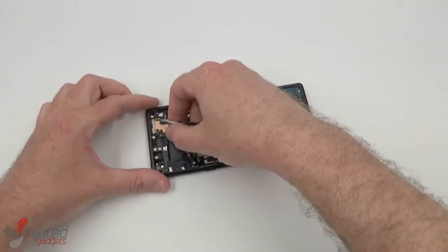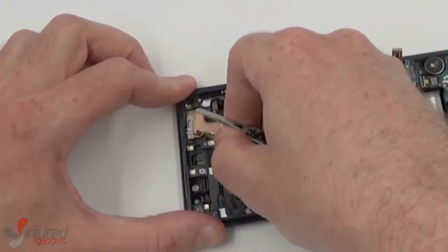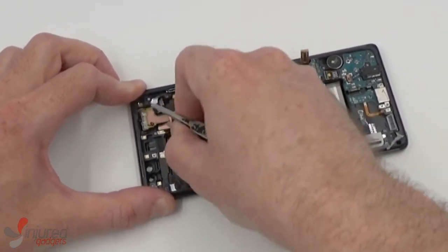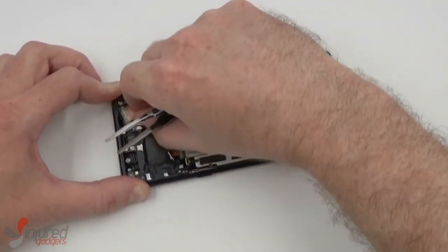Next, we'll remove the proximity and flash. Now there's some foil tape that you'll need to slice through, but once that's done, it should come free quite easily.